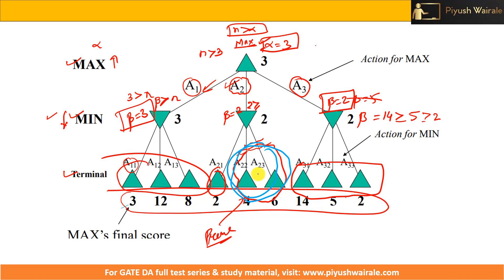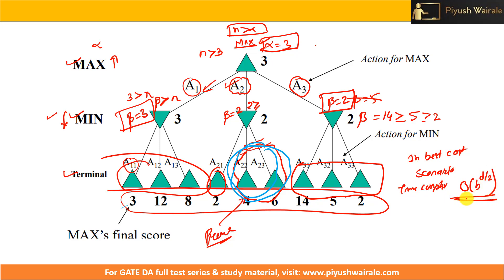By pruning some nodes, we save time. In the best case scenario, time complexity of alpha beta pruning is O(b^(d/2)). In the worst case, it will be the same as minimax — O(b^d).